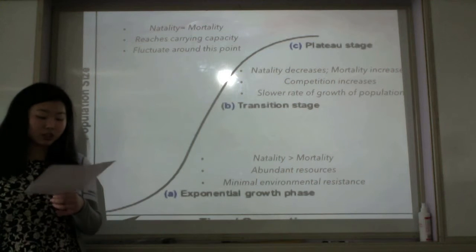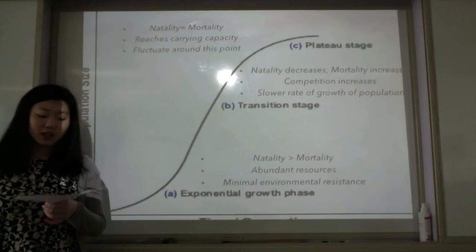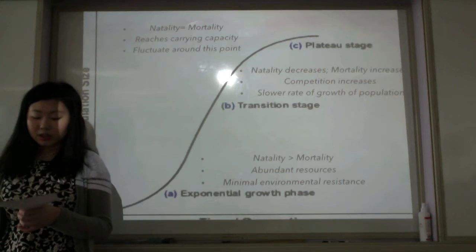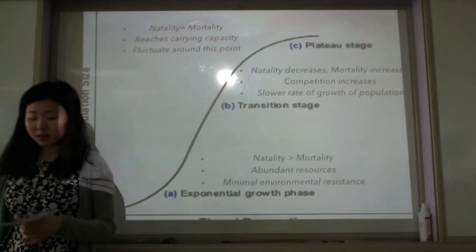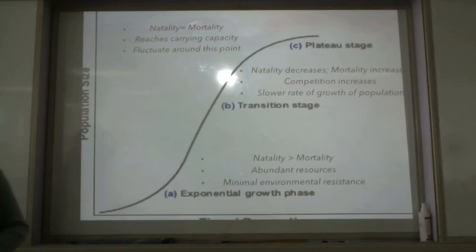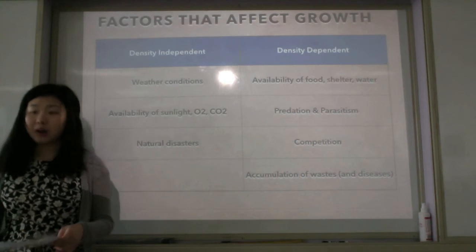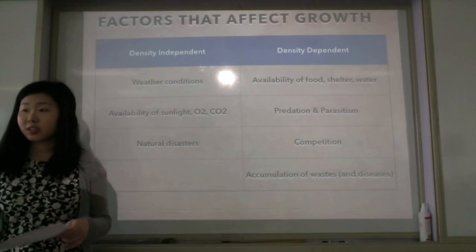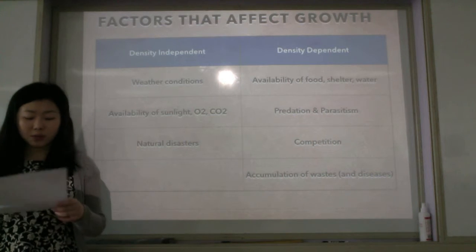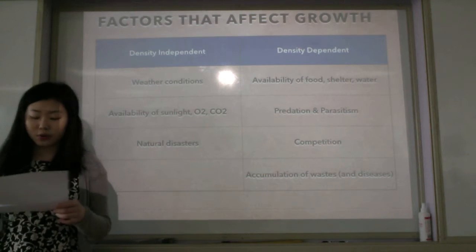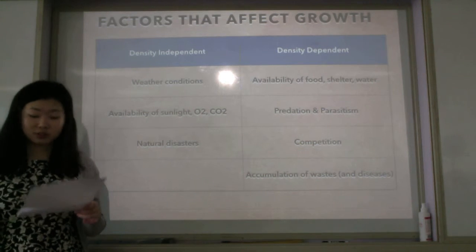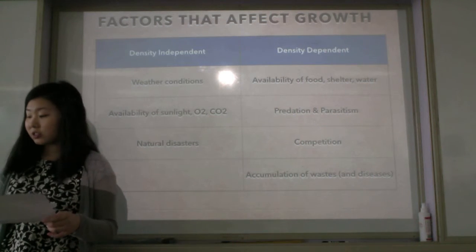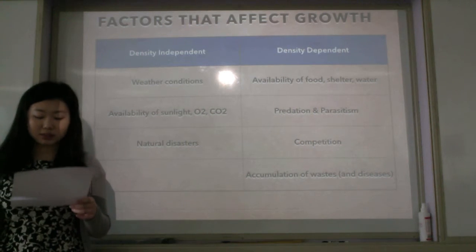Though the population size won't be static at this point, it will continue to fluctuate around this capacity without any net growth. Every population has a set range of environmental conditions it can endure, and conditions must stay within these ranges for population growth to occur. Factors that affect population can be categorized into two: density-independent and density-dependent.